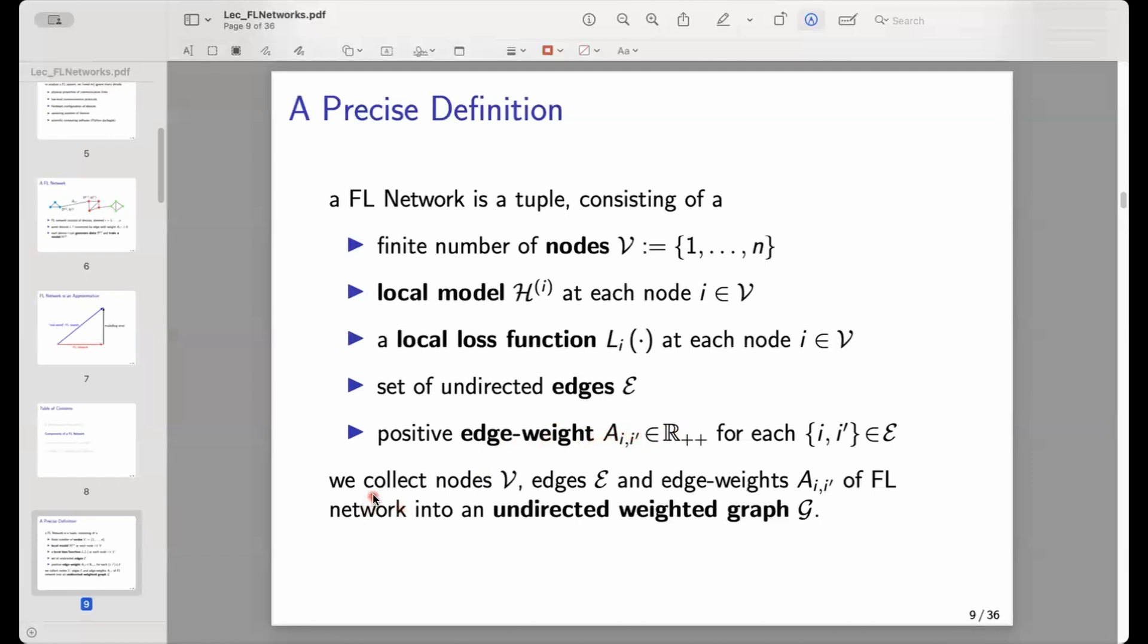It's convenient throughout the course to collect the nodes, these edges, and the edge weights into an undirected weighted graph. This is basically a shorthand for the nodes, edges, and edge weights. We use the shorthand calligraphic G.